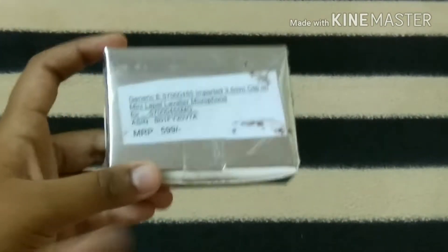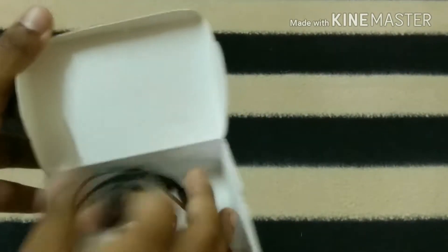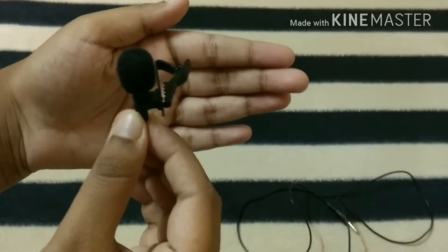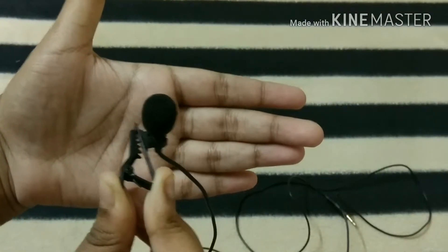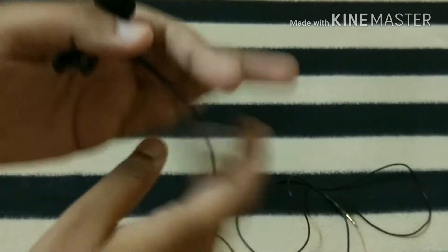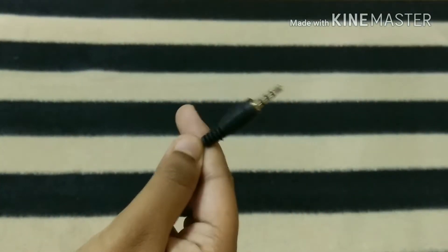So next is this generic lapel mic. I got this from Amazon for 340 rupees and this is how the mic looks. It's like a microphone and it has a clip so you can just put it onto your collar and you can use it. And this is the plug you have to just insert it into your mobile.